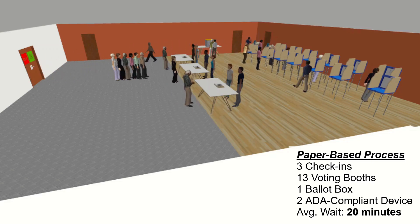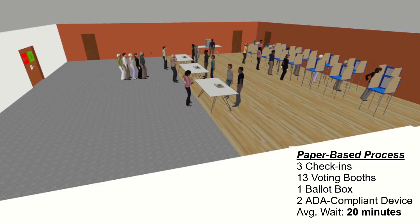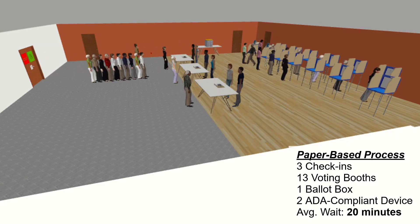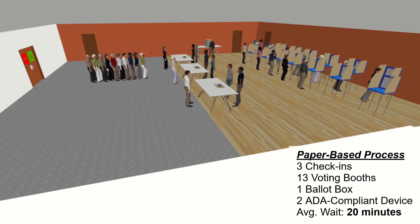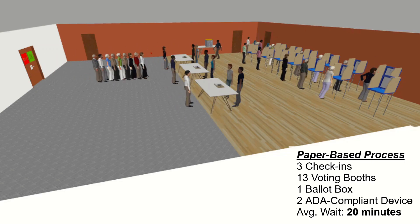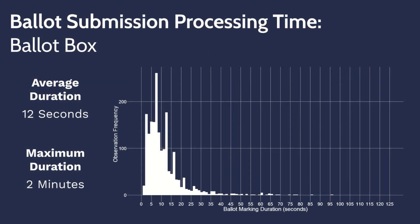To investigate the effect of using a ballot scanning device in this polling location, we first need to understand the processing time of ballot submission to a ballot box and the processing time of submitting ballots to a digital ballot scanner. The ballot box submission process takes voters 12 seconds on average but may take up to two minutes to submit their ballot.